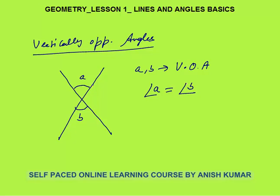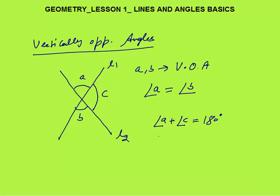Why are they equal? This is line L1 and this is line L2. Let's say this angle is C. Now we know that A plus C equals 180 degrees because they lie on the straight line L2 — the sum of all angles on a straight line is always 180 degrees. Similarly, B and C also lie on the same line L1, so B plus C also equals 180 degrees.